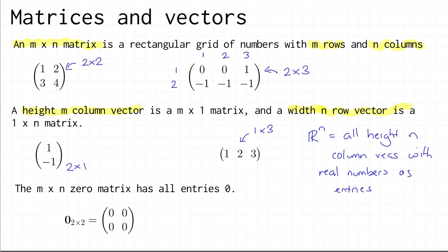So ℝⁿ is the set of all height-n column vectors with real numbers as entries. Similarly, from time to time we'll think about vectors with complex number entries, and ℂⁿ would mean the set of all height-n column vectors with complex number entries.